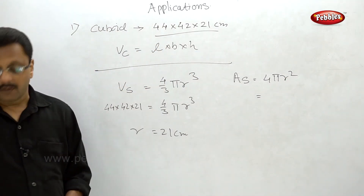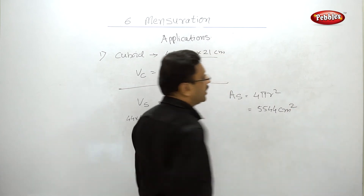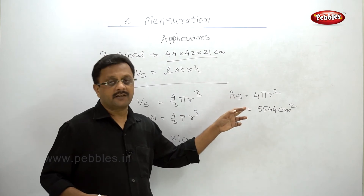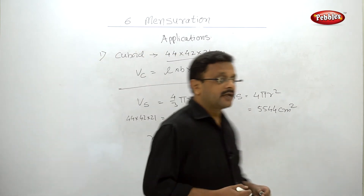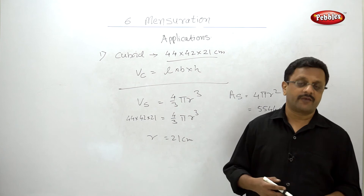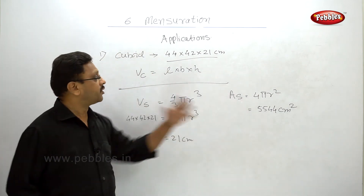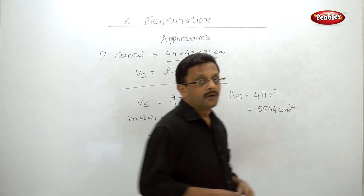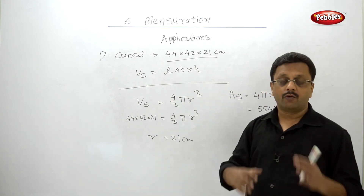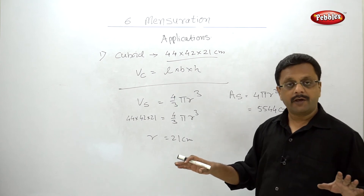The answer is r = 21 centimeters and the total surface area of the sphere is 4πr², giving 5544 square centimeters. For a sphere, the curved surface area and total surface area are the same. Remember: whenever one solid is melted and another solid is recast, the volumes of both objects are equal.